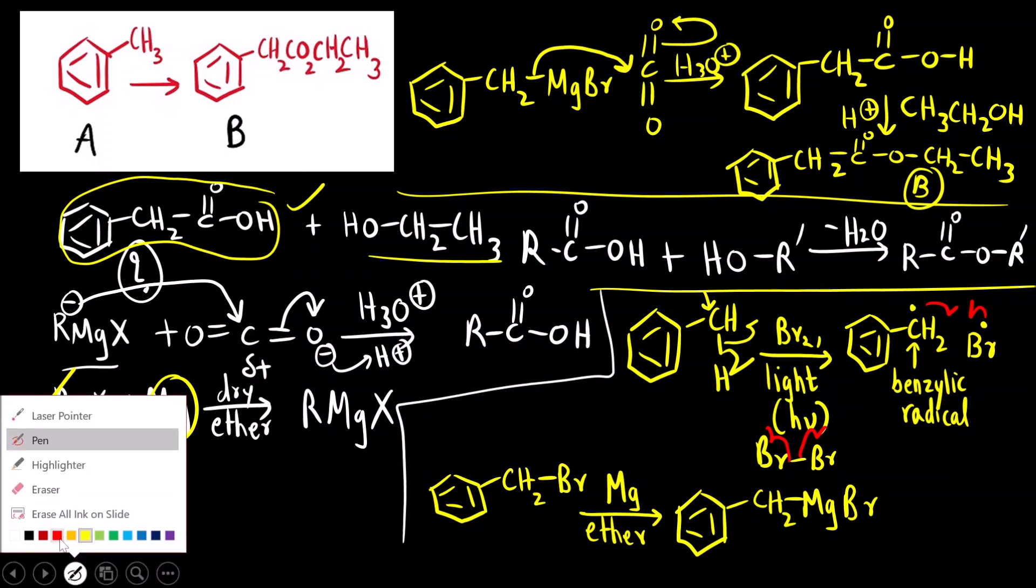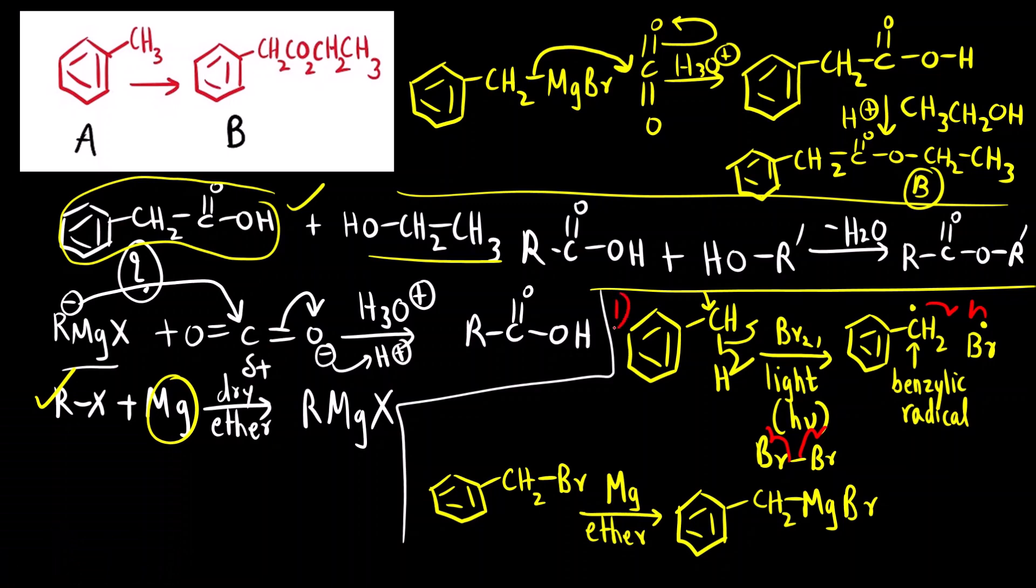I hope you have understood all the steps. Where we started, we first did the free radical bromination to form alkyl halide. Then we did reaction with magnesium to form the Grignard reagent. Second step was formation of RMGX, that is Grignard reagent. Then this Grignard reagent, third step was reaction of Grignard reagent with CO2. Last step was esterification, that is formation of ester. So we got the target molecule. I hope you have understood all the steps and you have liked the question. Thank you.